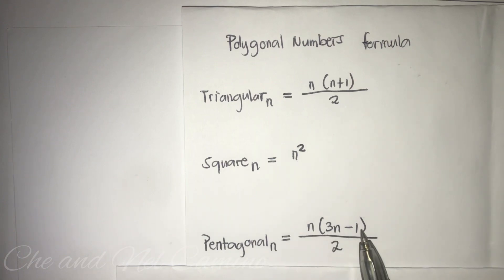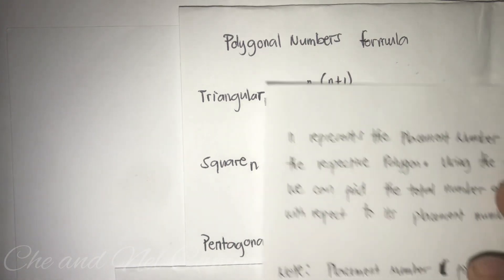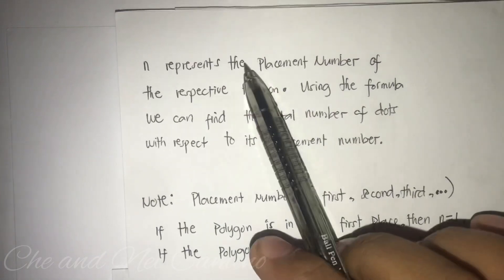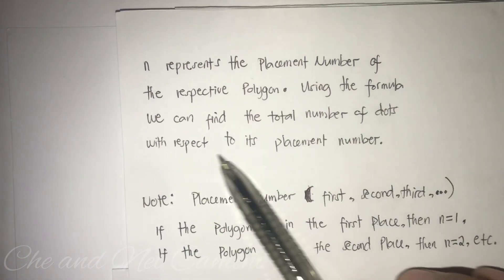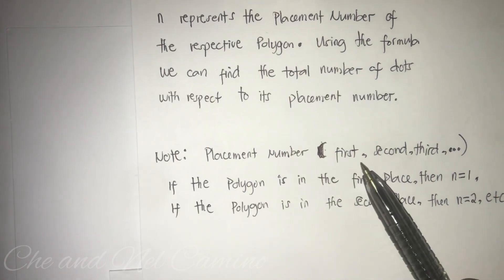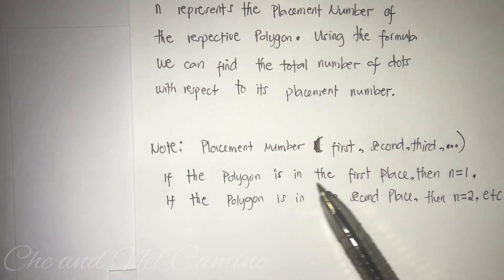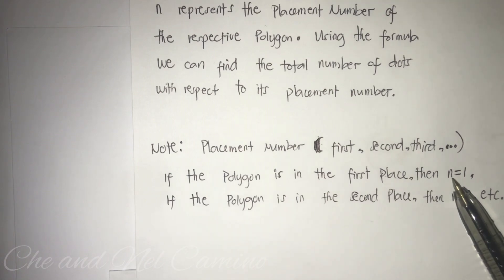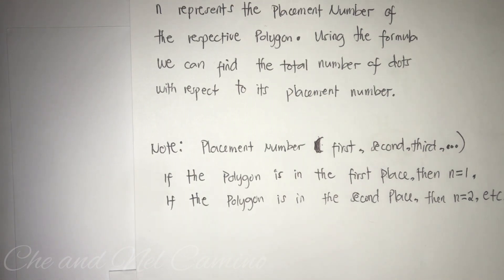The variable n represents the placement of the respective polygon. Using the formula, we can find the total number of dots with respect to its placement number — also known as first, second, third, etc. So if the polygon is in the first place, the value of n is equal to one. If the polygon is in the second place, then n is equal to two. If the polygon is in the third place, then n is equal to three, and so on.